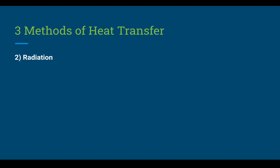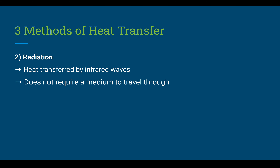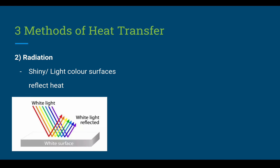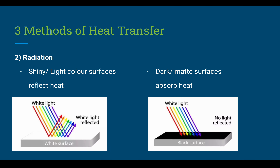The third and final main method of heat transfer is radiation, and it occurs through infrared waves. What's different about radiation is that it does not require a medium to travel through — radiation can happen in space, and this is actually how the sun transfers heat to us. It can be prevented by shiny or light-colored surfaces because these tend to reflect heat, whilst dark or matte surfaces absorb heat.